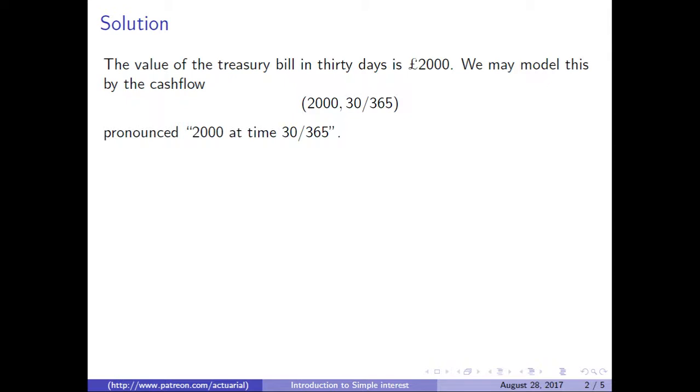The value of the treasury bill in 30 days is £2000. We may model this by the cashflow 2000 at 30/365. Note that as we have been given a per annum rate, we must first convert 30 days into years.